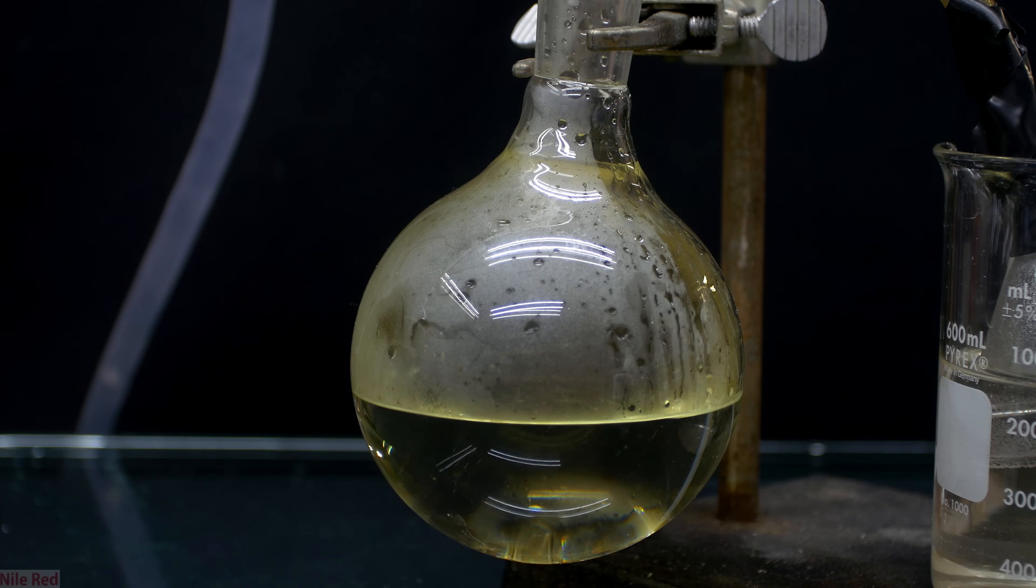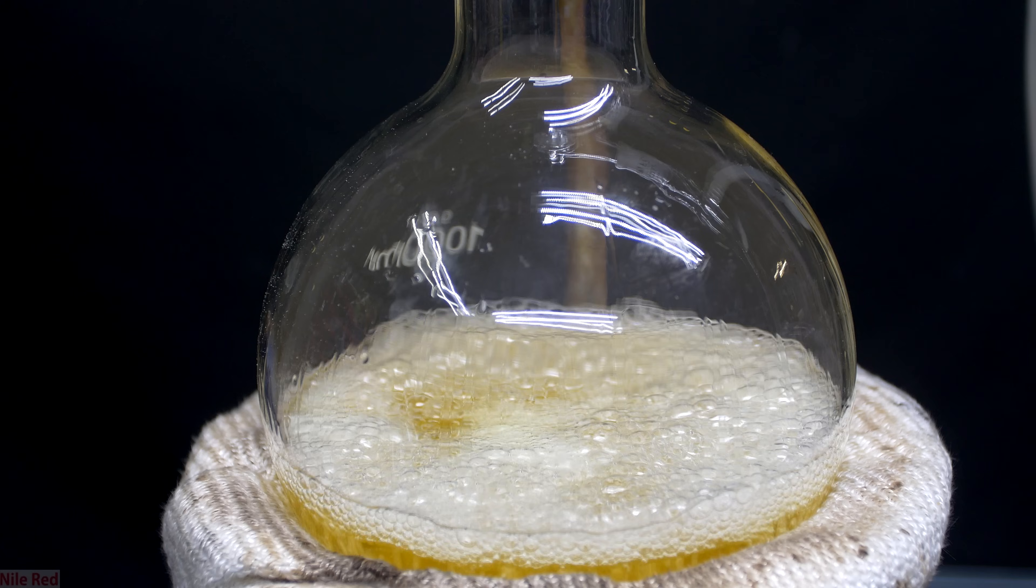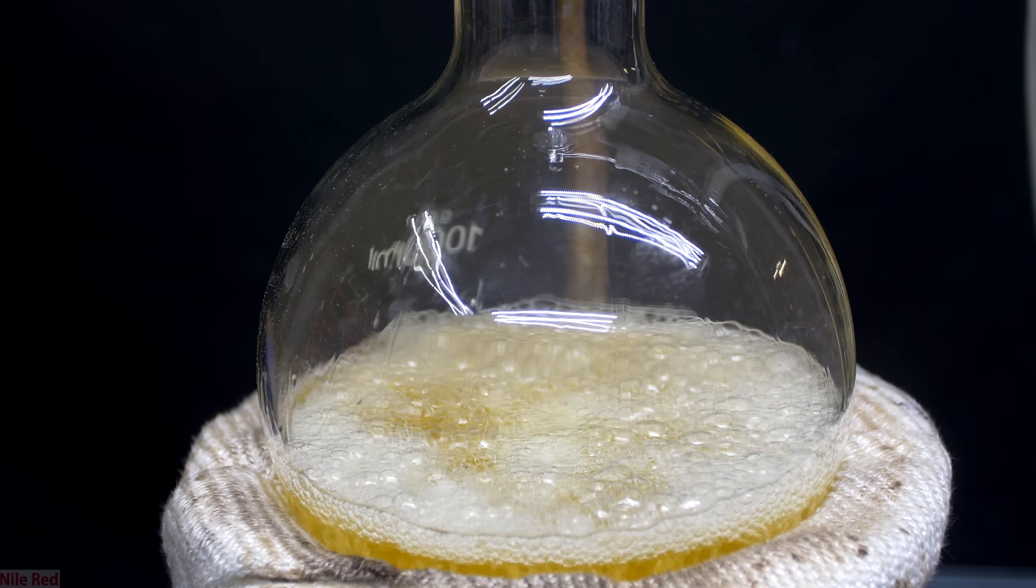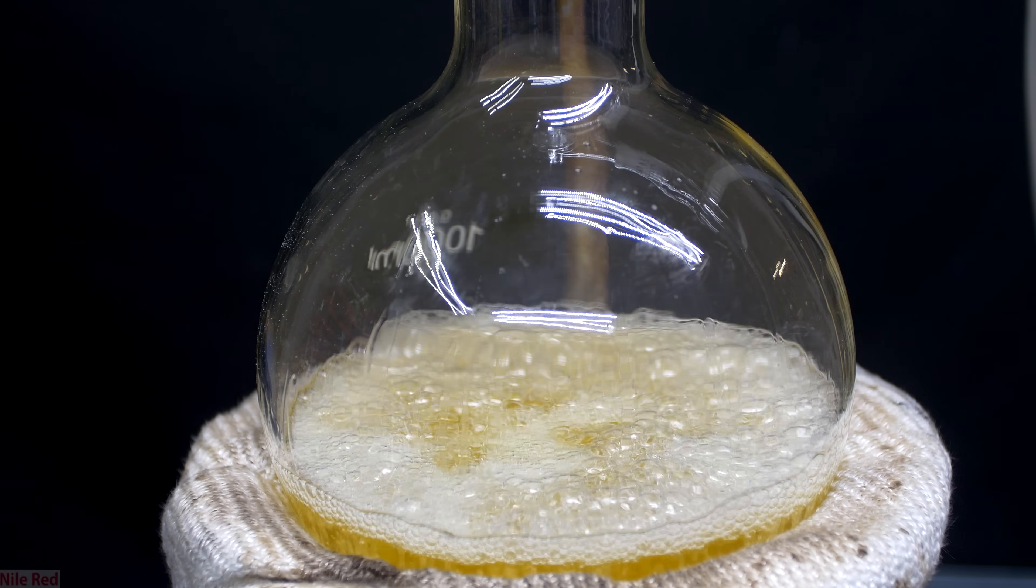So on the right side everything's looking good and we keep collecting our nitric acid, which is tainted a little bit yellow due to nitrogen dioxide gas. When we look at the boiling flask on the left side, you can see it's starting to froth more and this is indicating that the reaction is coming to an end.